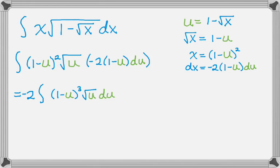I remember how to cube something. The coefficients are 1, 3, 3, 1, and then it's going to alternate signs. So let's do that, negative 2, and then 1, and then minus 3, and then plus 3, and then minus 1. And then I still have the u to the 1 half.